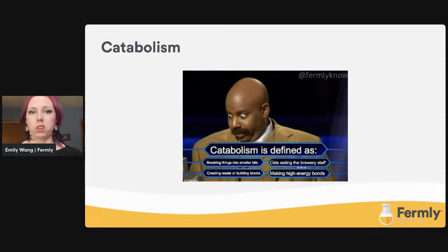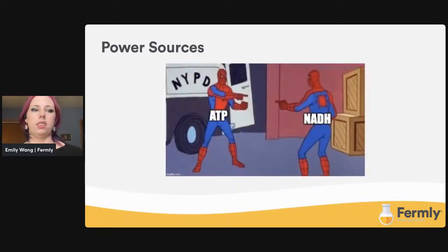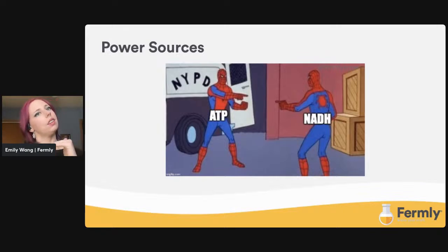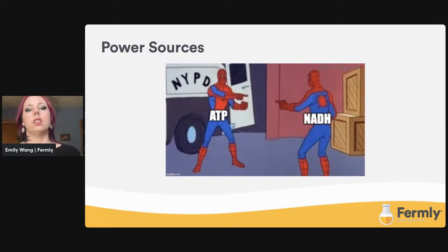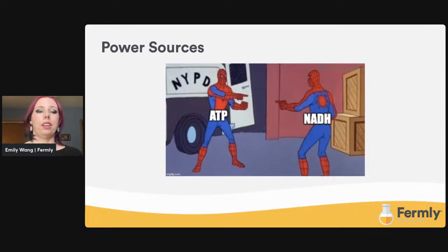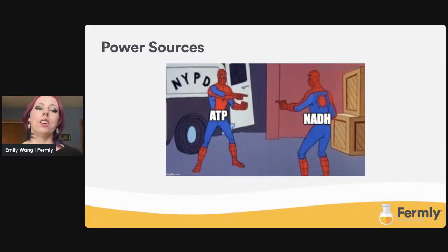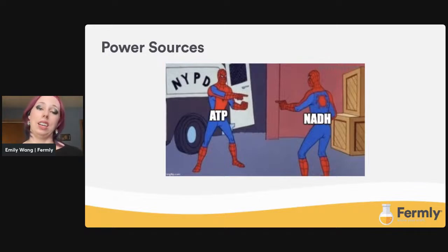We have two different power sources when we talk about the cell: ATP and NADH. ATP is adenosine triphosphate; the lower-energy version is ADP, adenosine diphosphate. Then we have NADH — nicotinamide adenine dinucleotide — and its low-energy version is NAD+. These names are really long, so I encourage you to use the acronyms. A fun thing to think about is adenine, which is featured in both molecules. It's a nitrogenous base used in genetic material, but it is also the vehicle for energy currency in the cell.